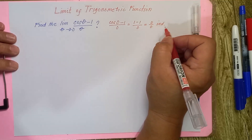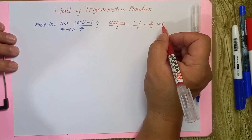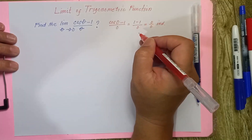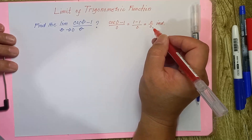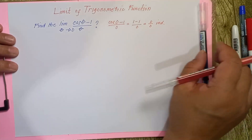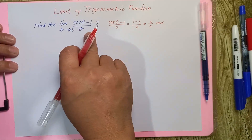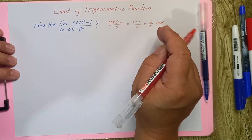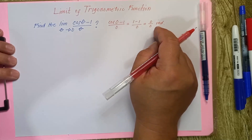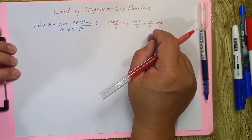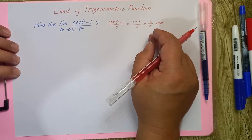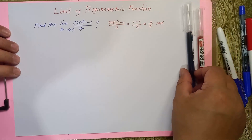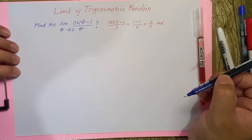An indeterminate result means the limit still exists — there will always be a limit. If it were undefined, the limit would not exist. Because it is indeterminate, we need to look into other processes. We will use the method of conjugation, or the rationalization method.